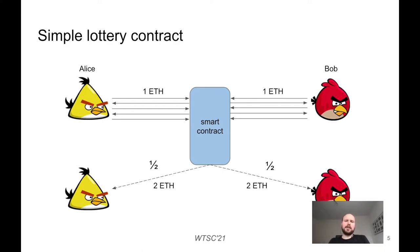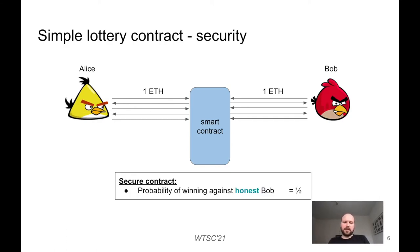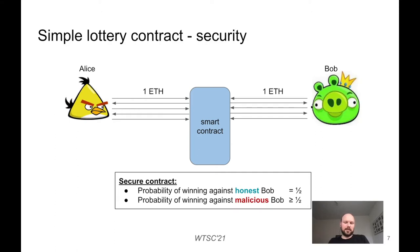How can we define the security of such a contract? We can define security from the point of view of honest allies. This contract is considered secure if the probability of winning against honest Bob is equal to 1/2, and also the probability of winning against malicious Bob is greater or equal to 1/2.